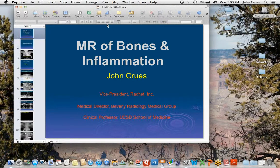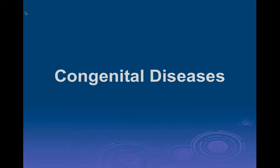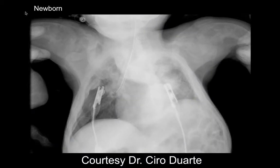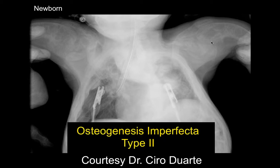Now let's talk about bones and inflammatory disease of the shoulder. Looking at this case of a frontal chest in a newborn, there's a markedly abnormal appearance to the bony structures pretty much diffusely, particularly in the bilateral proximal humeral heads. This is consistent with osteogenesis imperfecta.